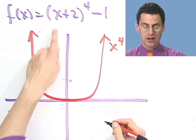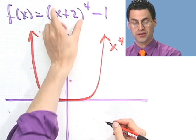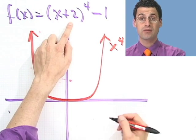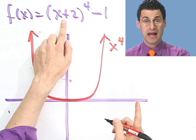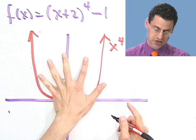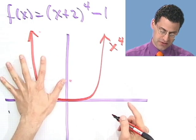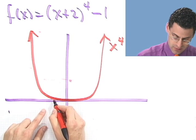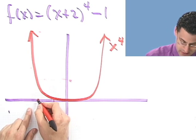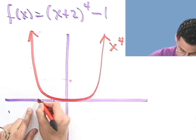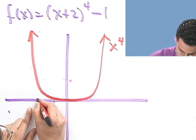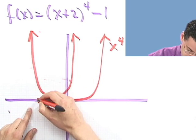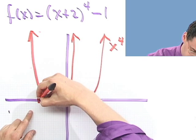Then, what's (x+2) all to the fourth? That's a shift in x. Remember: add to x, go west. So I shift the x⁴ picture two units to the left — shifting this whole picture two units left, 1, 2 — and it would look like the same curve shifted. That's (x+2)⁴.